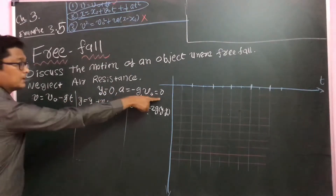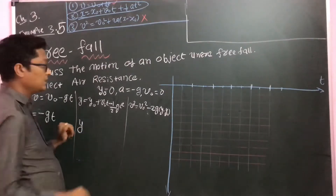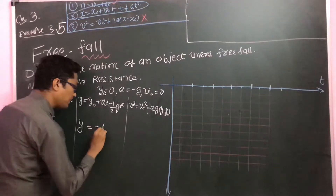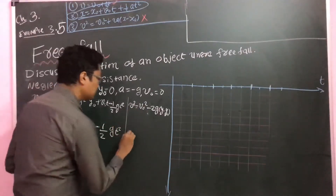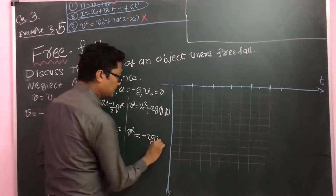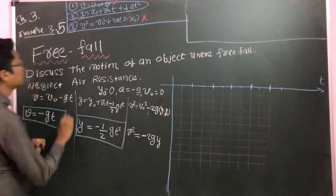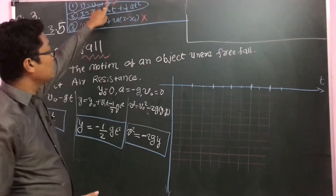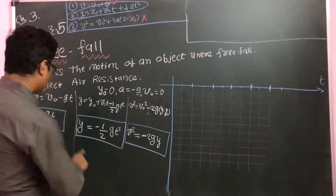With v₀ equal to zero and y₀ equal to zero, the equations simplify. Velocity: v equals minus gt. Displacement: y equals minus one-half g t². And the third: v² equals minus 2gy. These three are known as the free fall equations — the three kinematic equations applied for free fall.